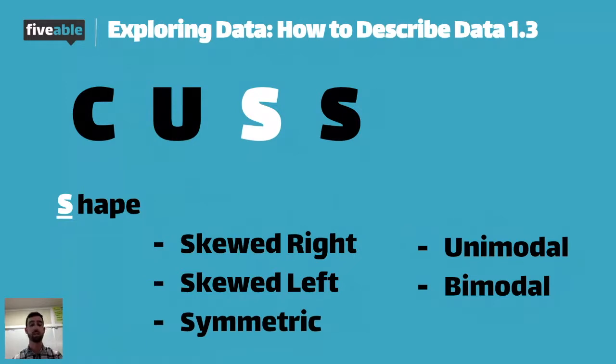And remember, a distribution is just how we display data. So skewed right and skewed left, sometimes students have a tough time thinking about which one is which. And the way I tell my students is, where is the tail of the distribution? If it's on the right-hand side, then the distribution is skewed to the right. If it's on the left-hand side, then the distribution is skewed to the left. Now, you might be thinking, okay, what does that actually look like? I'm going to go back two slides to show you.